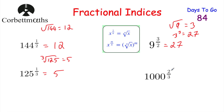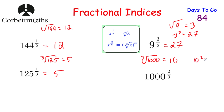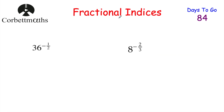Finally, 1000 to the power of 2/3: denominator is 3, so take the cube root of 1000 = 10 (since 10 × 10 × 10 = 1000). Then the numerator is 2, so do 10² = 100. So 1000 to the power of 2/3 equals 100.